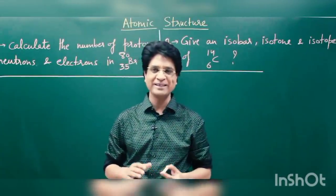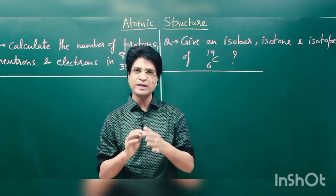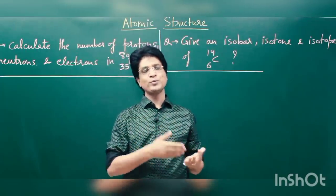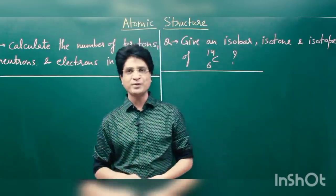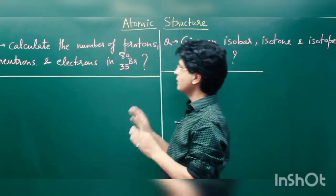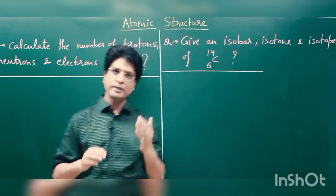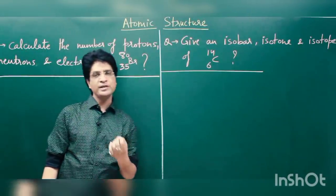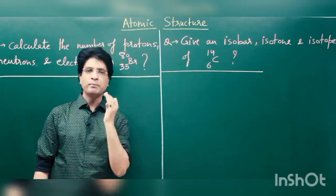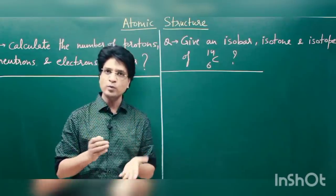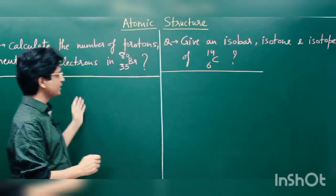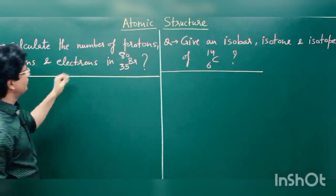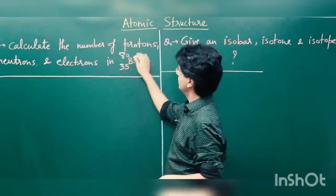Hello students, welcome back. Today we will do some questions on the concepts we mastered in the last class — isotopes, isobars, isotones, and finding number of electrons, protons, and neutrons. We begin with easier questions and move to tougher ones. The first question: calculate the number of protons, neutrons, and electrons in bromine-80, where the mass number is 80 and atomic number is 35.